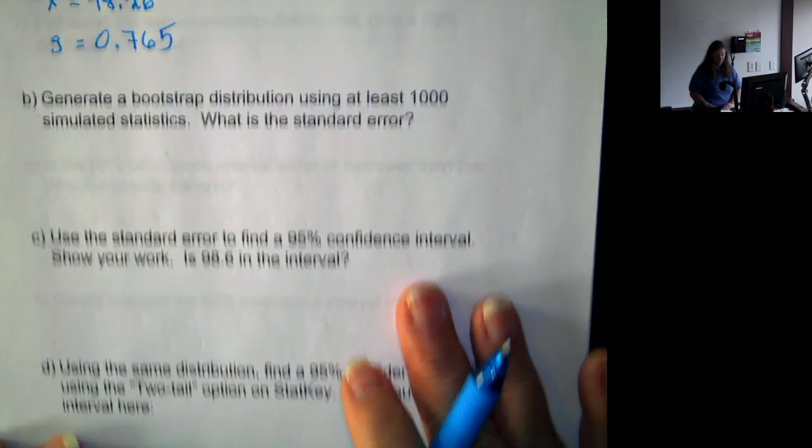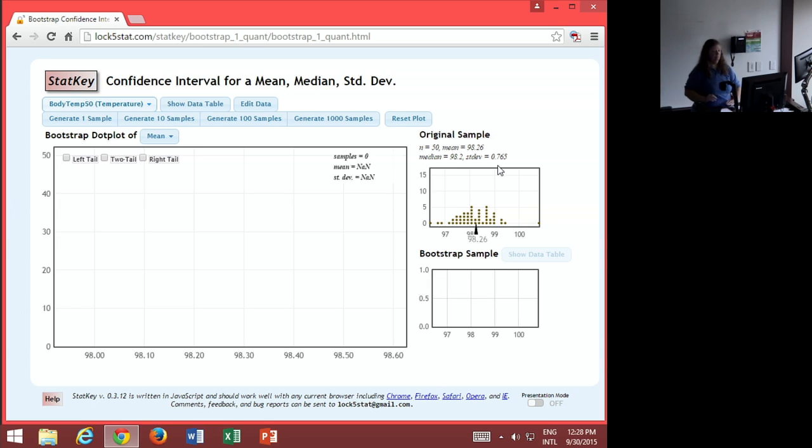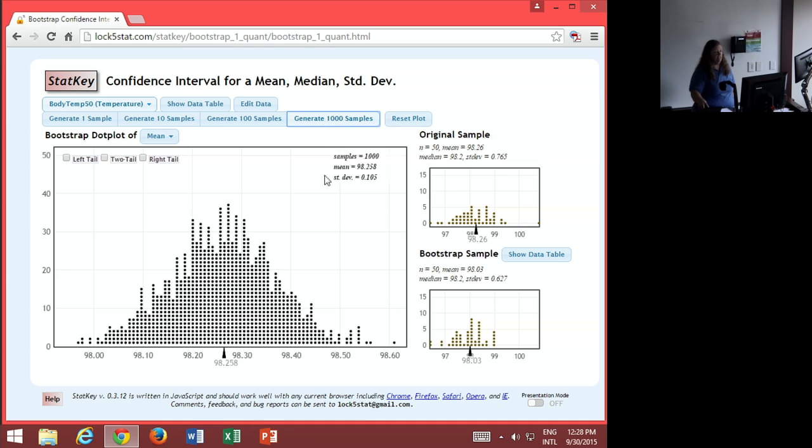Now we want to generate a bootstrap distribution using at least 1,000 simulated statistics. So we're going to generate a thousand samples. And we want the standard error. Now with this, the standard deviation of the bootstrap is our standard error.